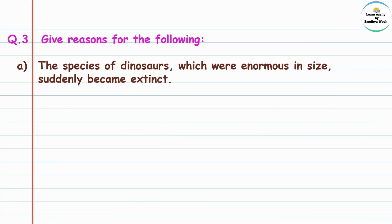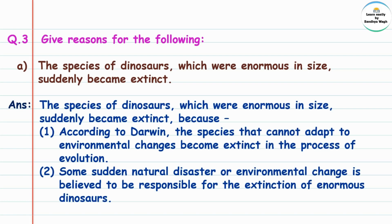Question 3: Give reasons for the following. The species of dinosaurs which were enormous in size suddenly became extinct. Enormous means very large and extinct means became nonexistent.